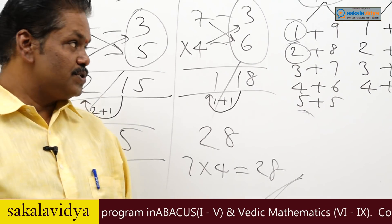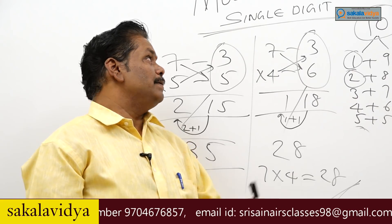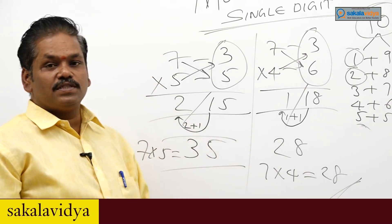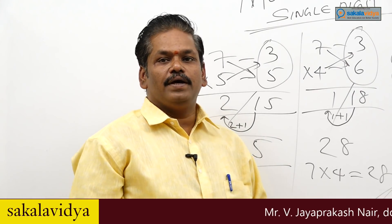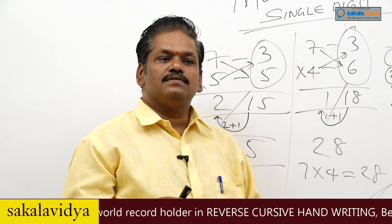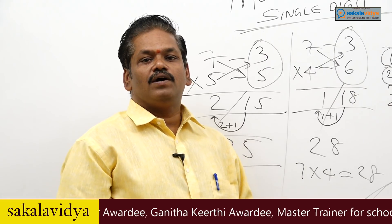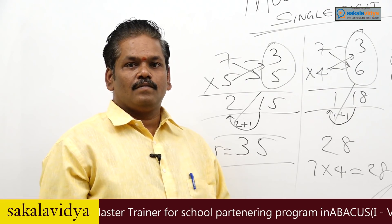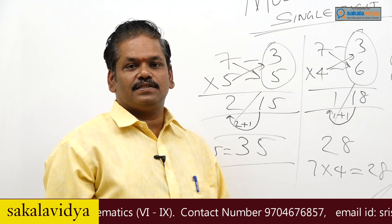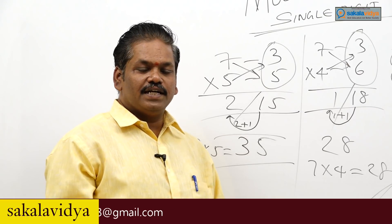I hope viewers have understood this multiplication of single digit numbers. In the next section we will be coming out with multiplication of any 2-digit numbers by using some base. Here we used the base 10 system; next we will be using base 100, base 1000, and so on. The process will be the same. We will work out examples in the next section with multiplication of double digit numbers, and in the future we will cover divisions as well.